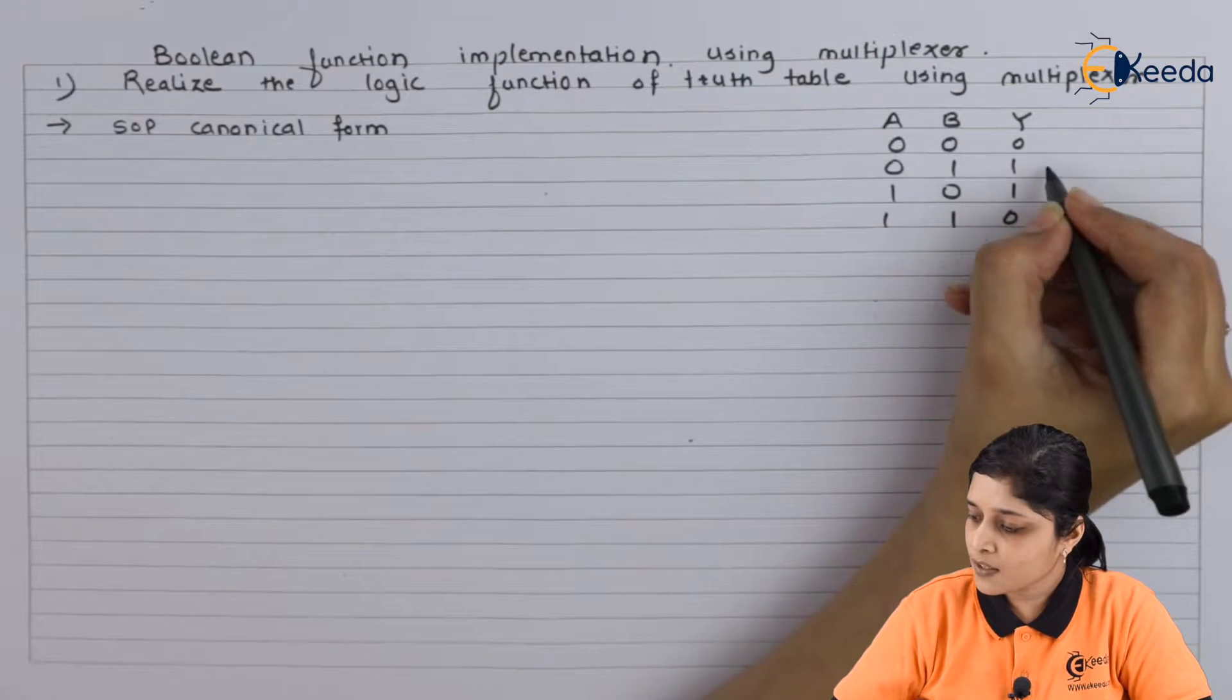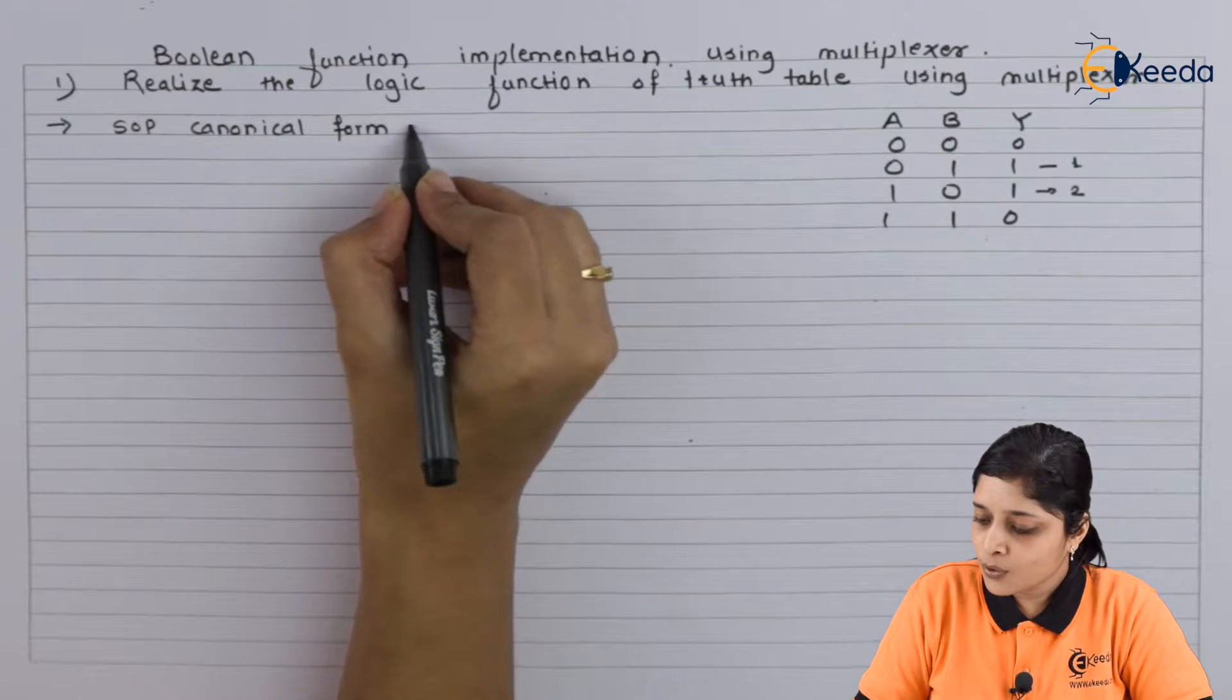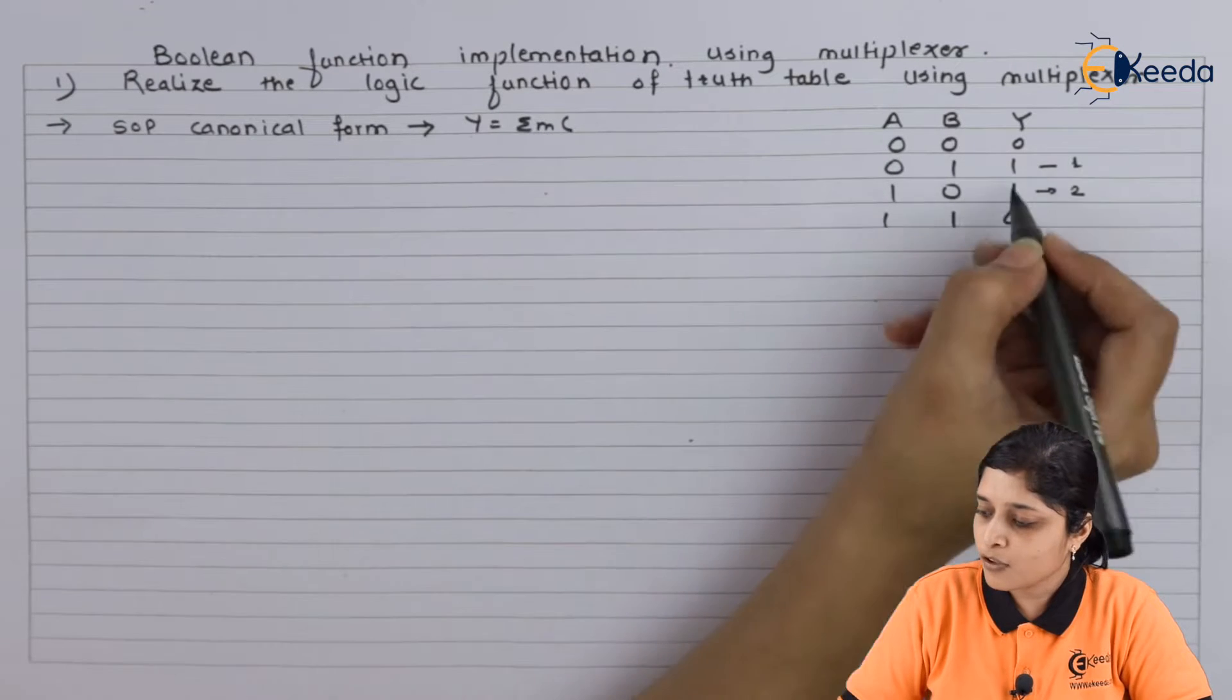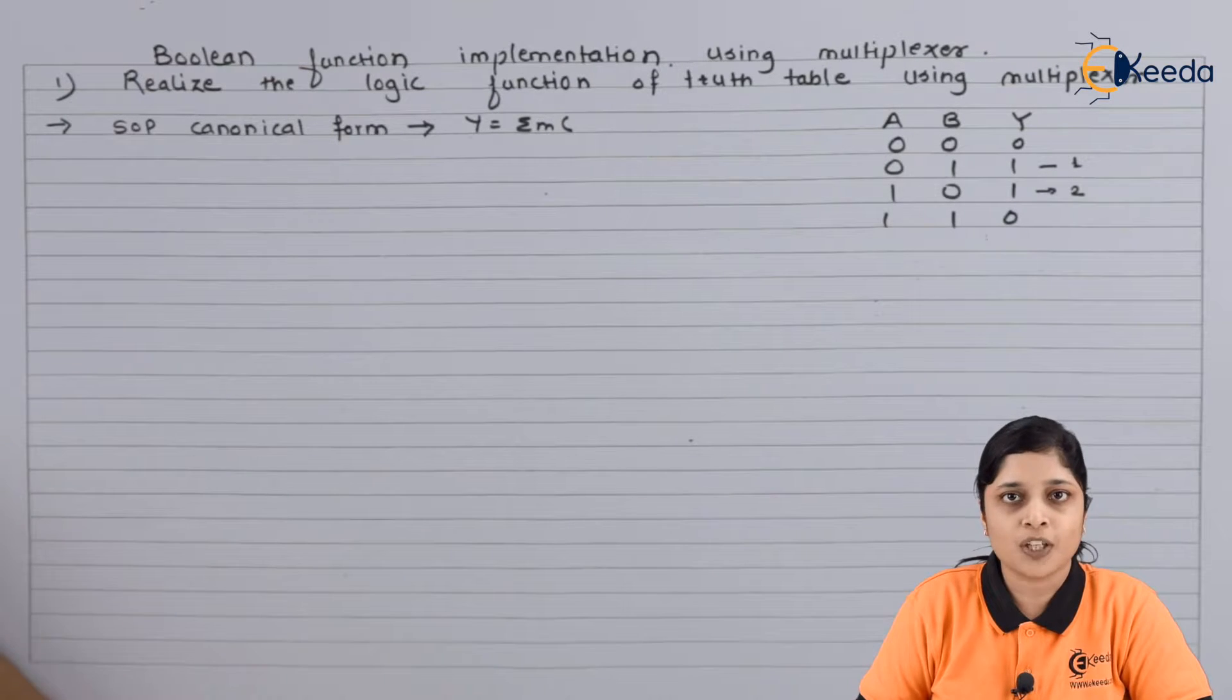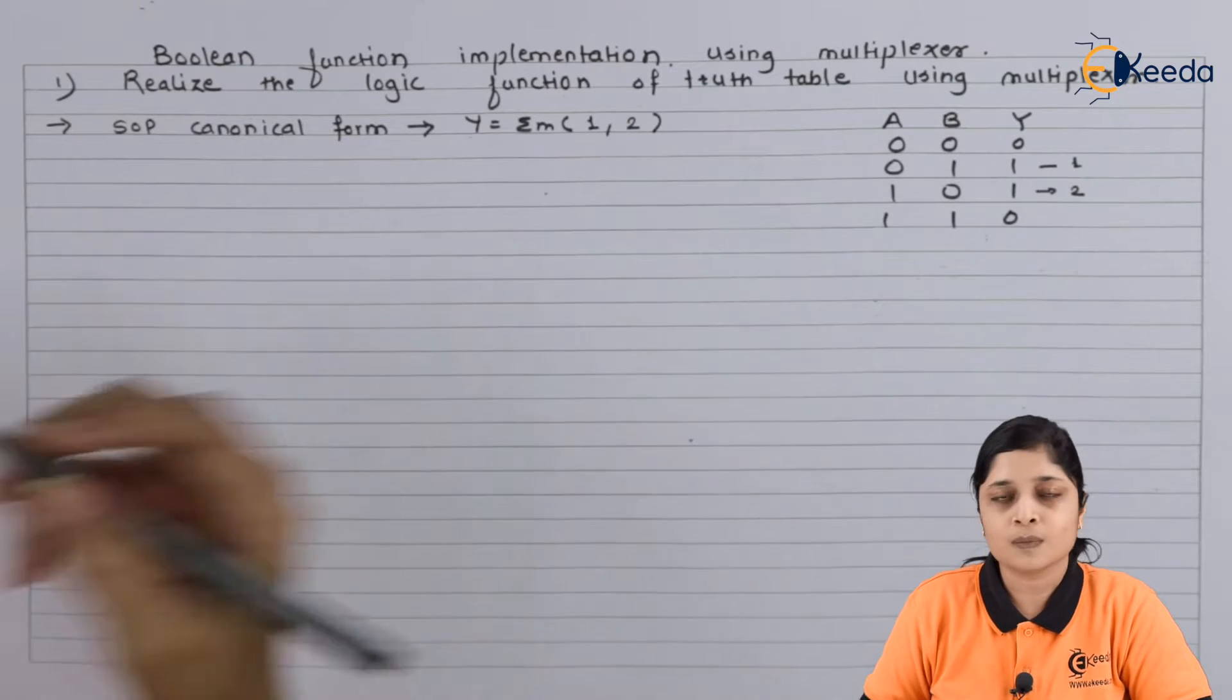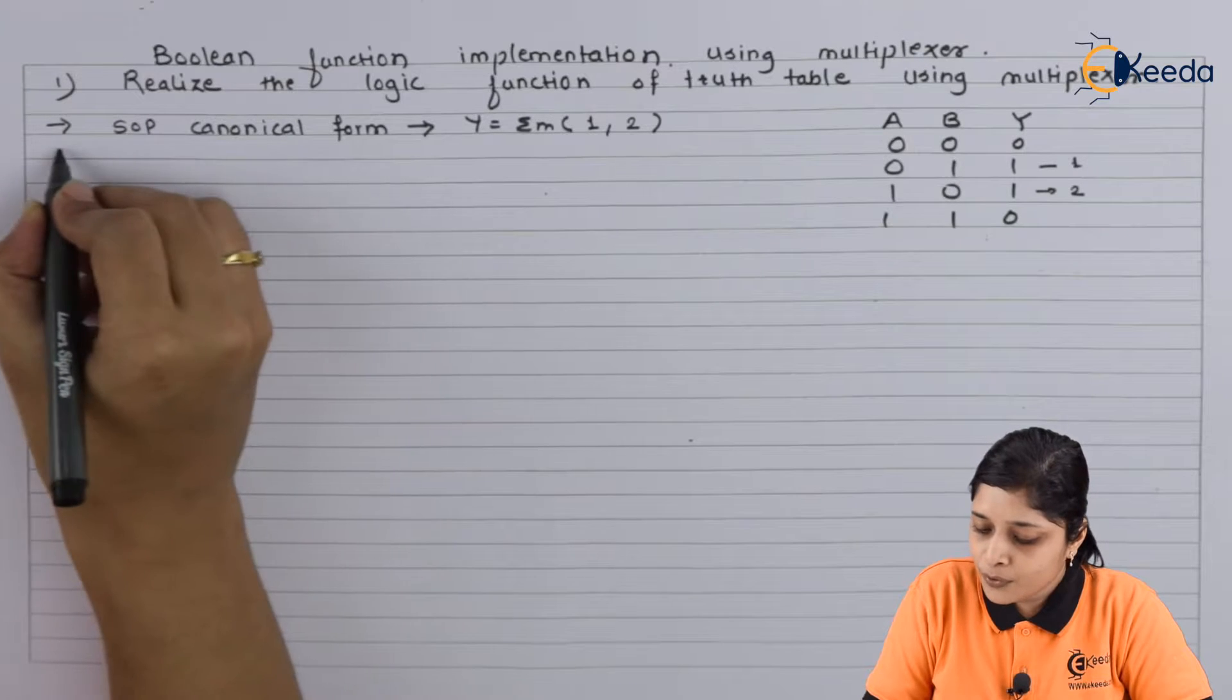If you see here zero, one, and two, we can represent y equals summation m. You have to focus on logic one, so inside the bracket we will write one and two.